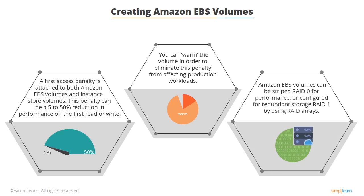Amazon EBS volumes can be striped RAID 0 for performance or configured for redundant storage RAID 1 by using RAID arrays. You can create RAID arrays by using the standard operating system tools.